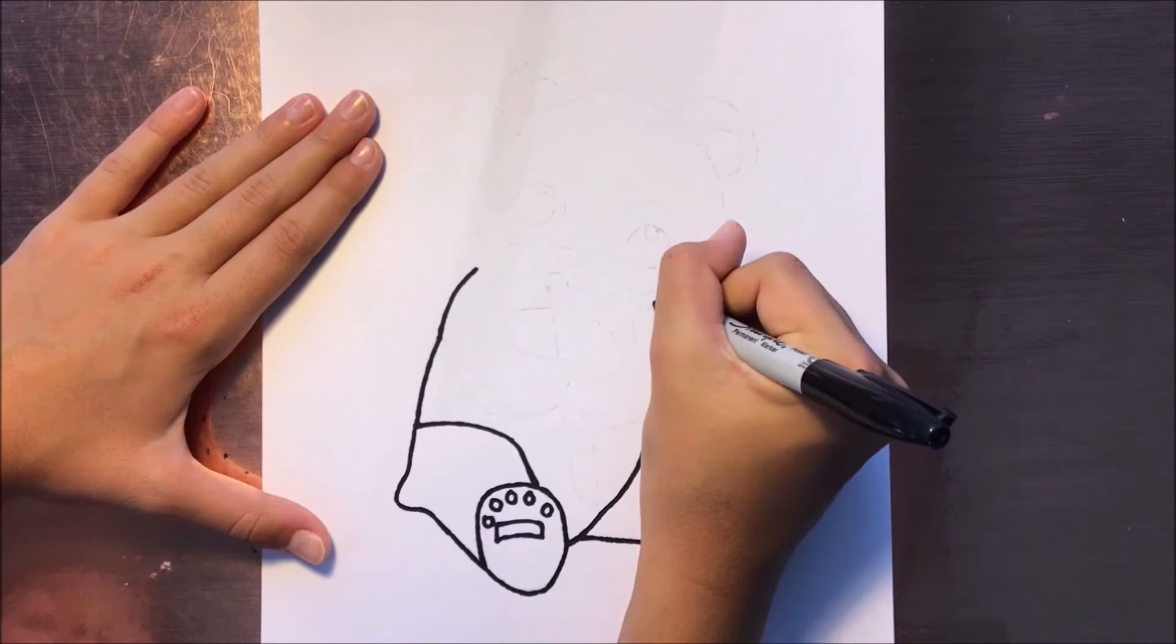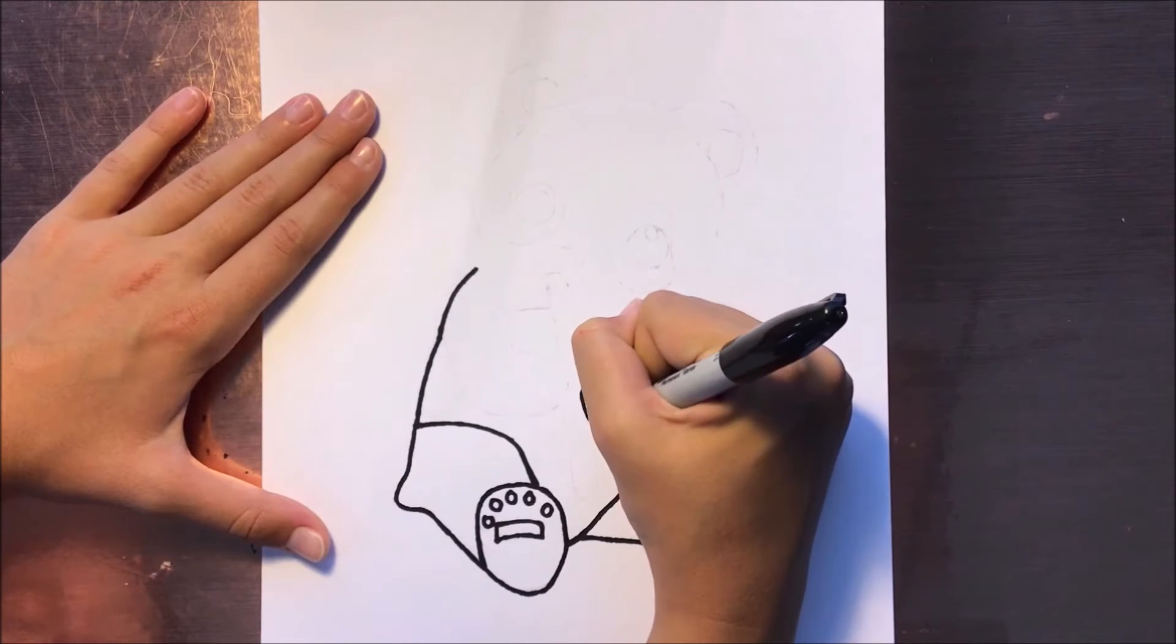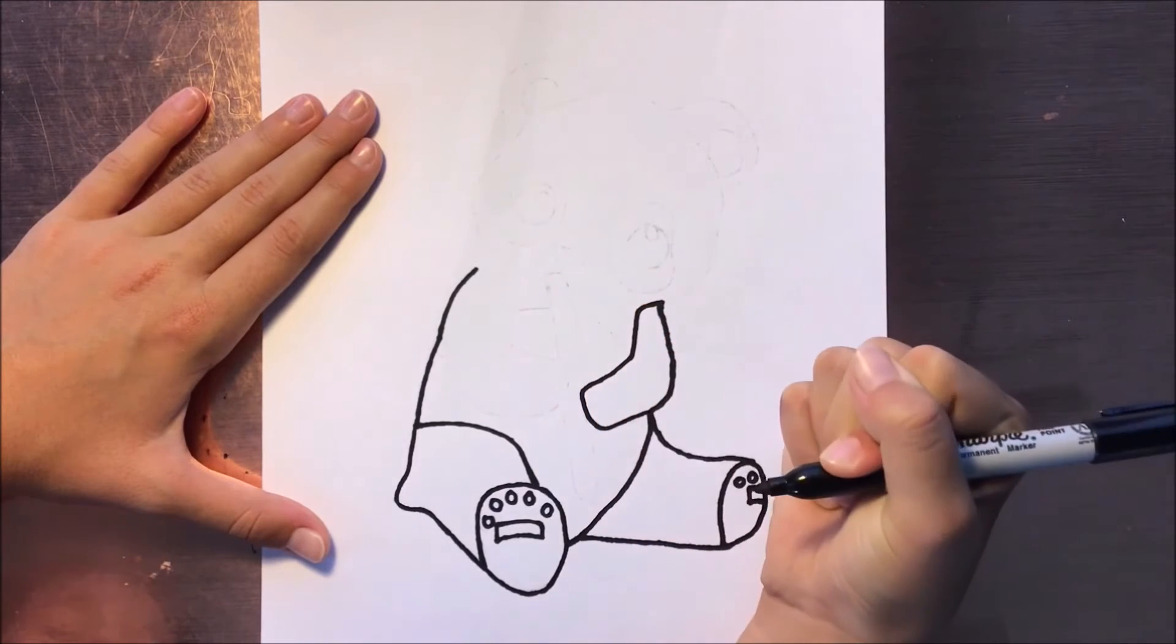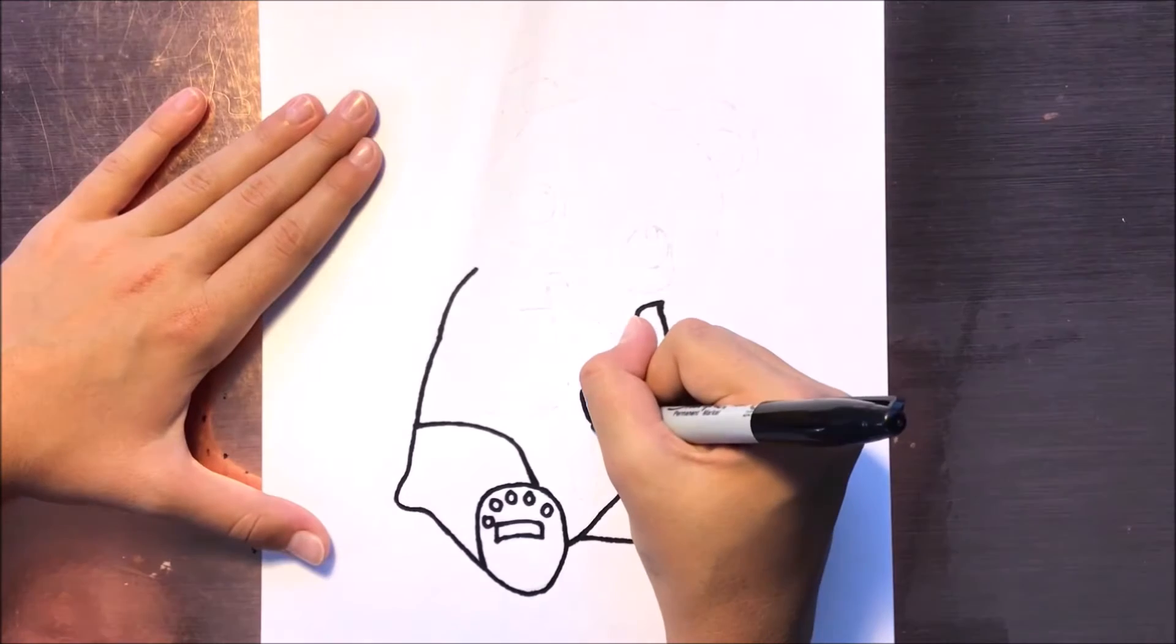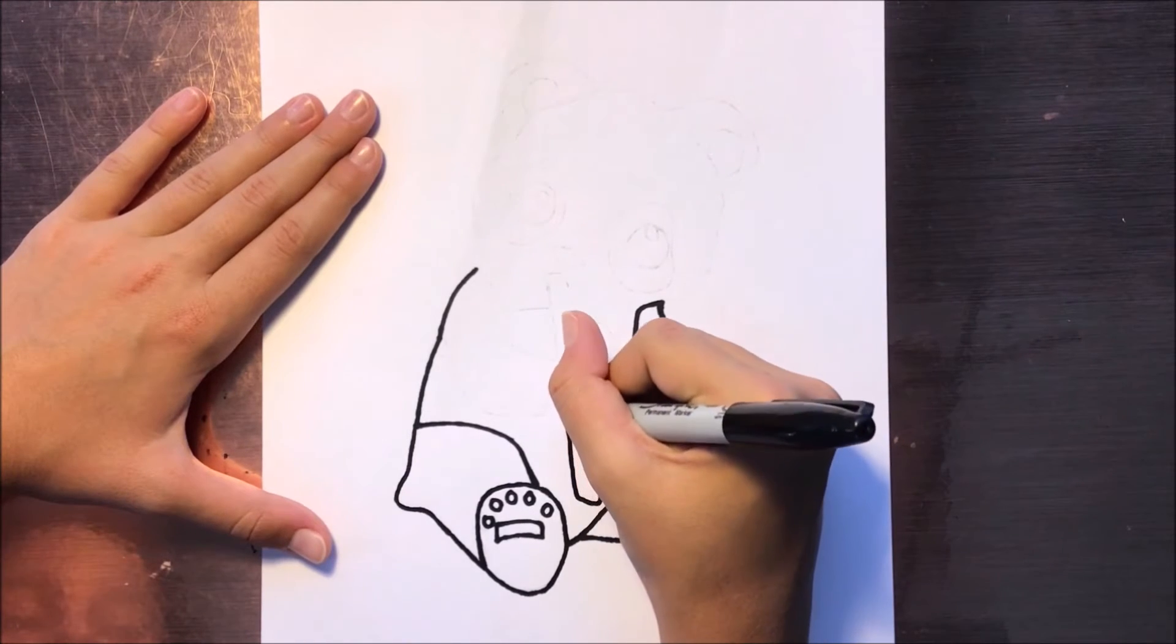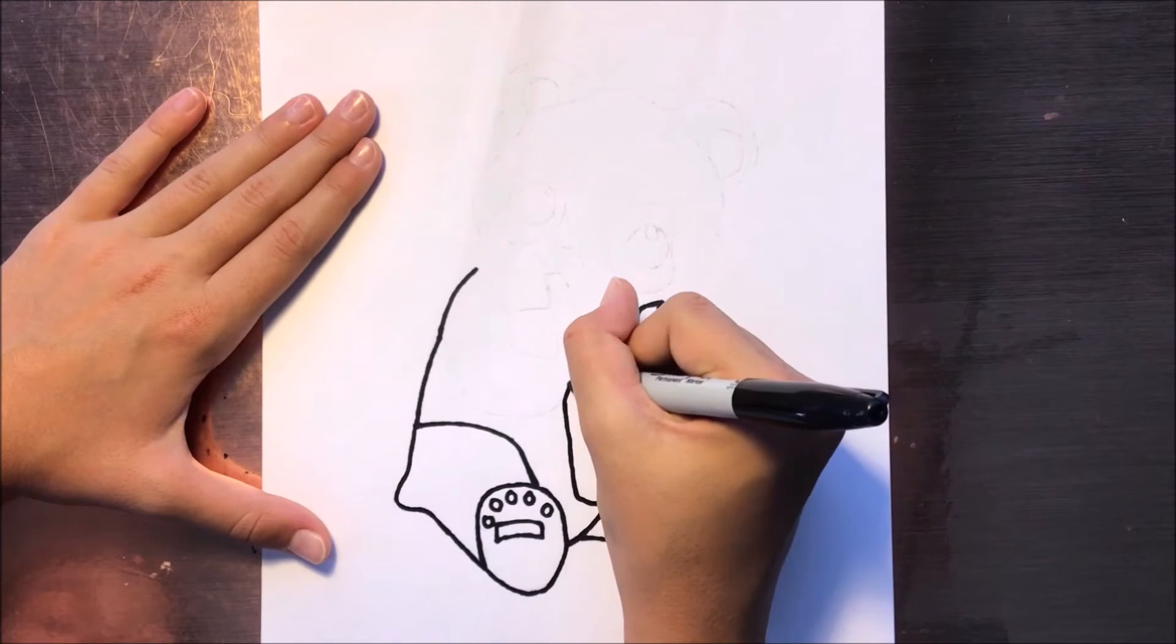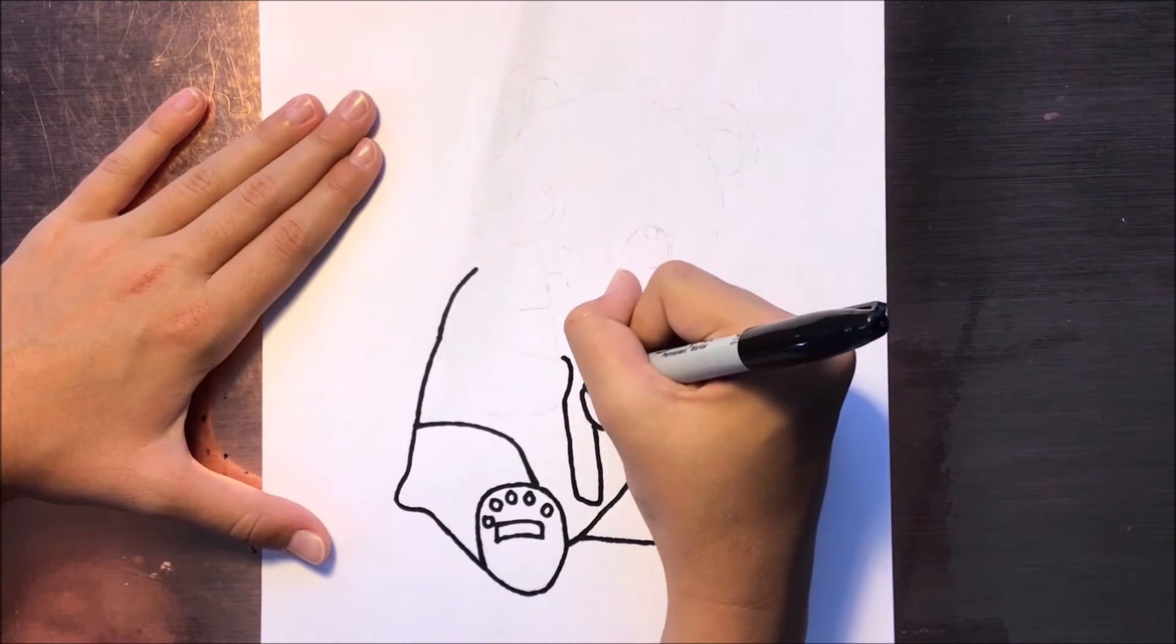Now his arm is going to come around here because he's going to be holding a piece of bamboo. So he'll go like this. Then we'll draw the bamboo around here, just like that, and continue it going up here.